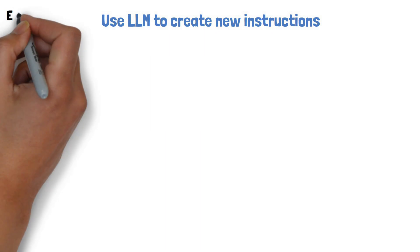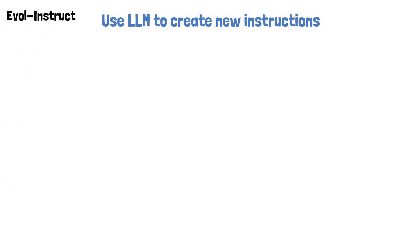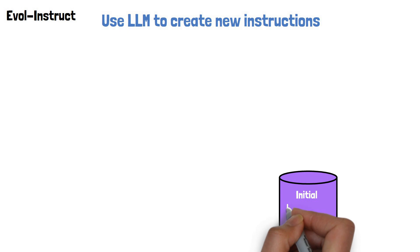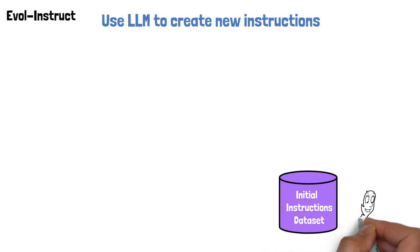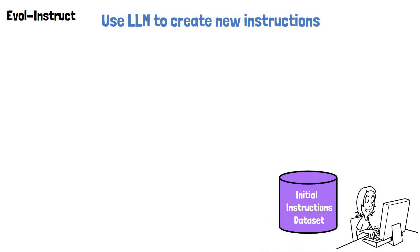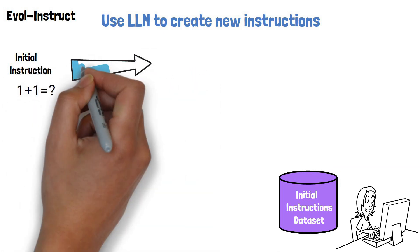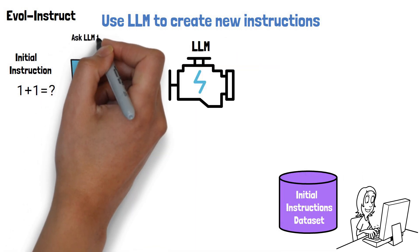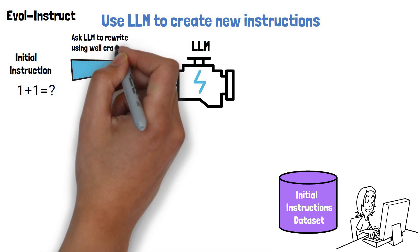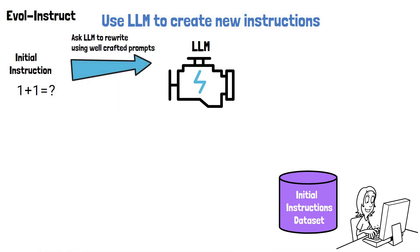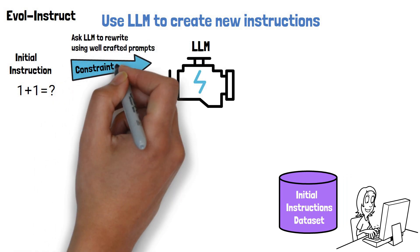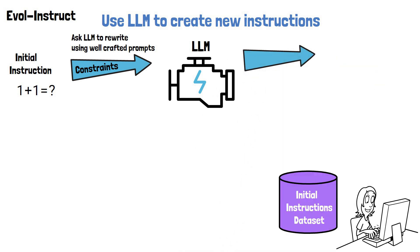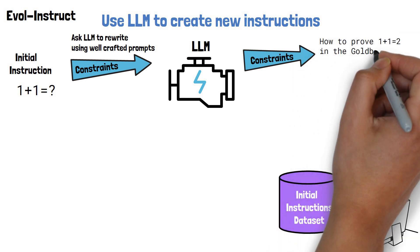They call their method EvolveInstruct. They start with an initial small dataset of instructions which are manually crafted. In each step they take an initial instruction, which will be transformed into a new instruction. This is done by providing the initial instruction to an LLM and asking it to rewrite the initial instruction using well-crafted prompts. For example, one type of prompt is used in order to add constraints to the original instruction, and the LLM then outputs a new instruction matching the requirement.